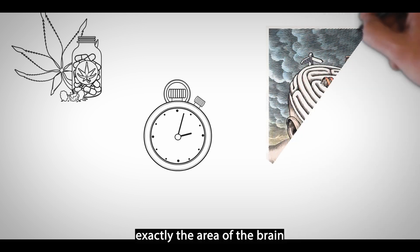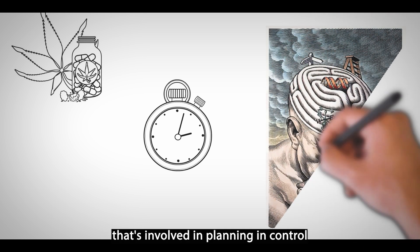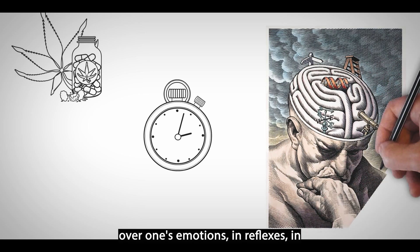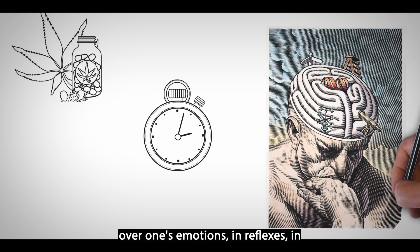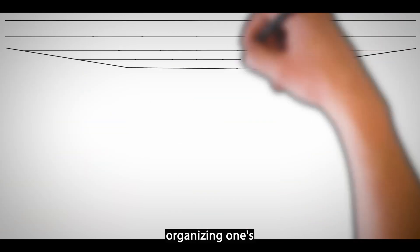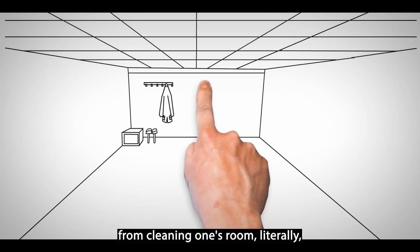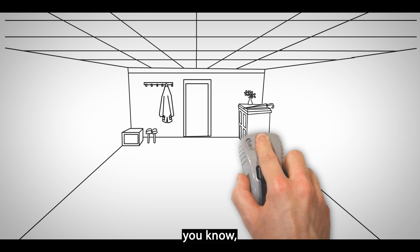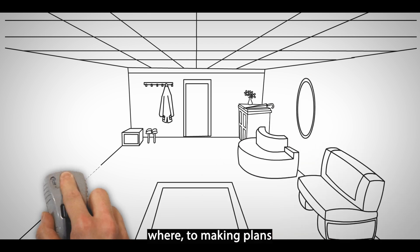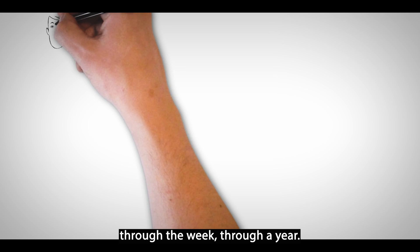The cortical thinning is occurring in exactly the area of the brain that's involved in planning, in control over one's emotions, in reflexes, in organizing one's life in a number of different ways, anywhere from cleaning one's room, literally, knowing what goes where, to making plans that extend out through the day, through the week, through a year.